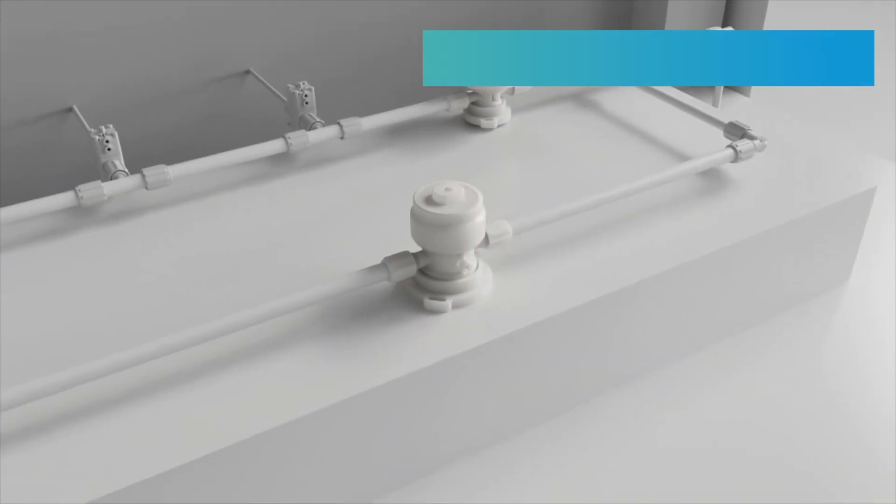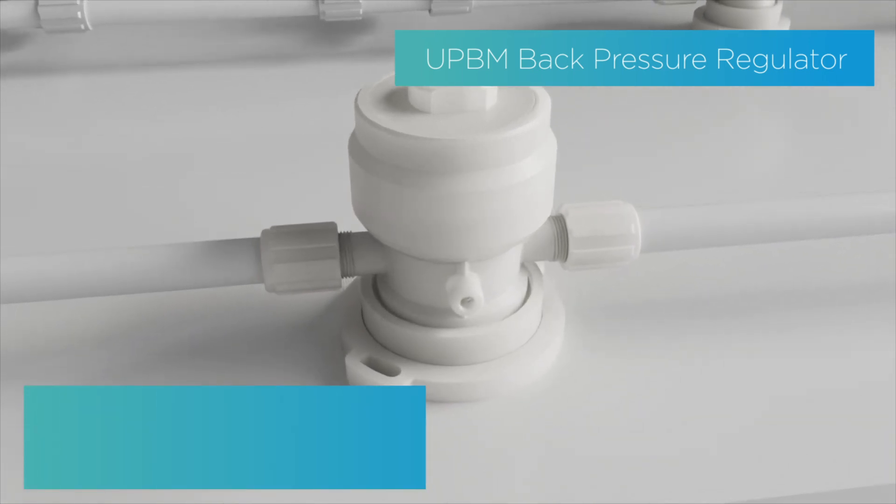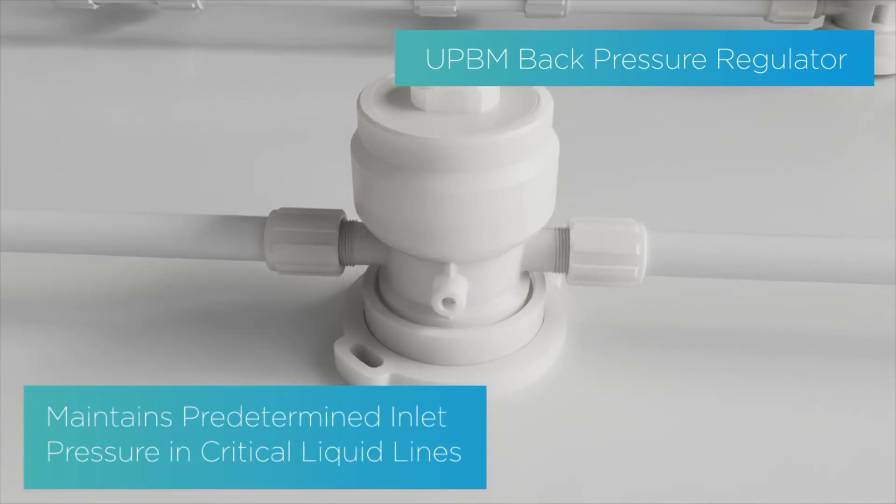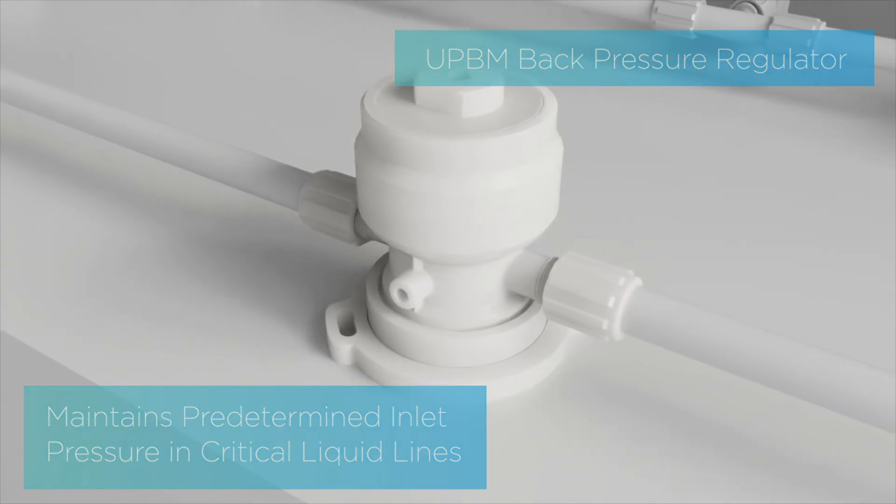The Furon UPBM Back Pressure Regulator is a control valve engineered to accurately maintain a predetermined upstream pressure in critical liquid lines commonly found in the semiconductor industry.